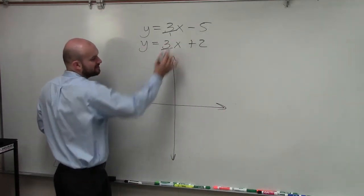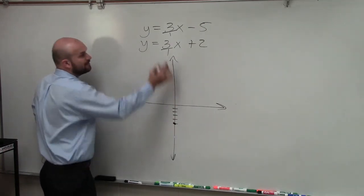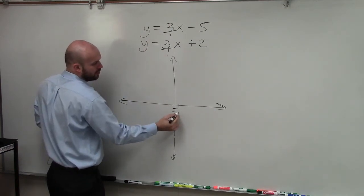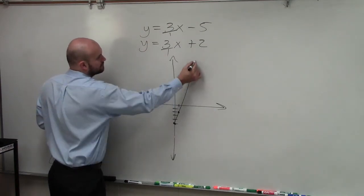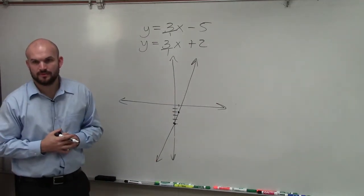So here, my y-intercept is negative 5. So I'll go down 5: 1, 2, 3, 4, 5. And then my slope is positive 3 over 1. So I go up 3 over 1. Everybody see that?